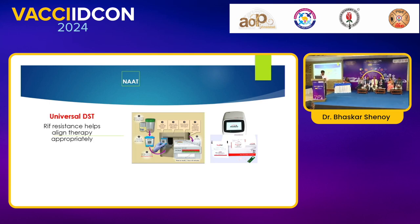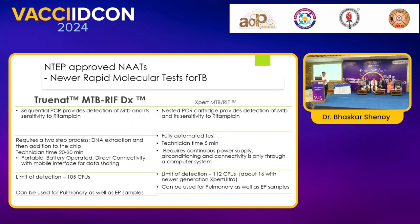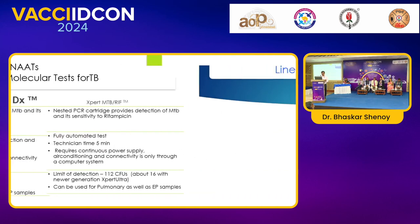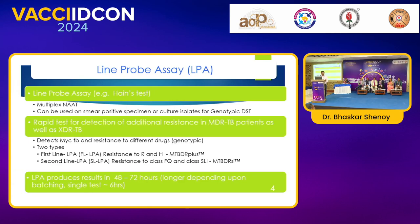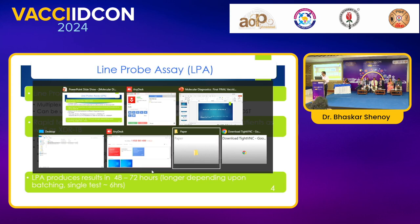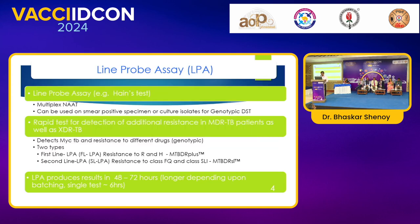CBNAAT gives results faster — it is automated, just load and within 45 minutes to 2 hours you get the result. In LPA, many steps are done manually so it takes longer and is a bit expensive — not everywhere available. The advantage of LPA over CBNAAT is that CBNAAT shows only rifampicin resistance, whereas LPA can also look at isoniazid and second-line antibiotics. Regarding the discrepancy in CBNAAT versus LPA: when there is very low bacterial load, there are chances CBNAAT can have false positive for rifampicin resistance genes.